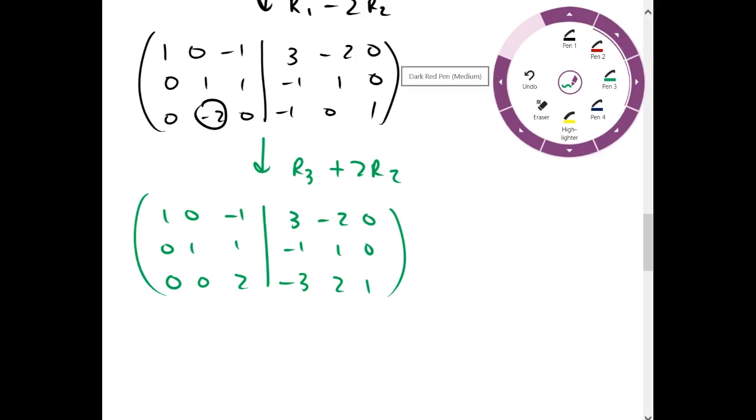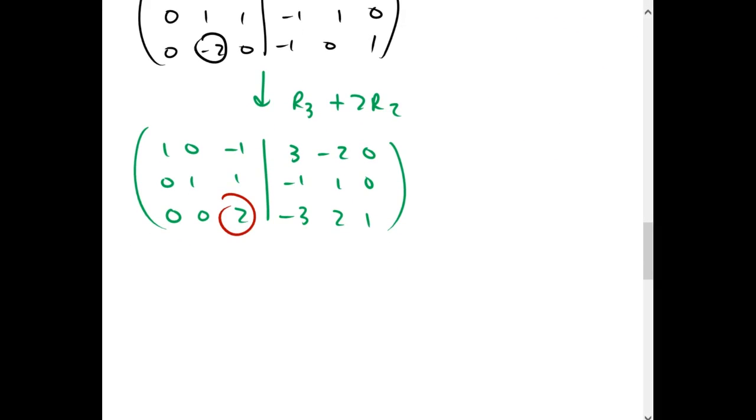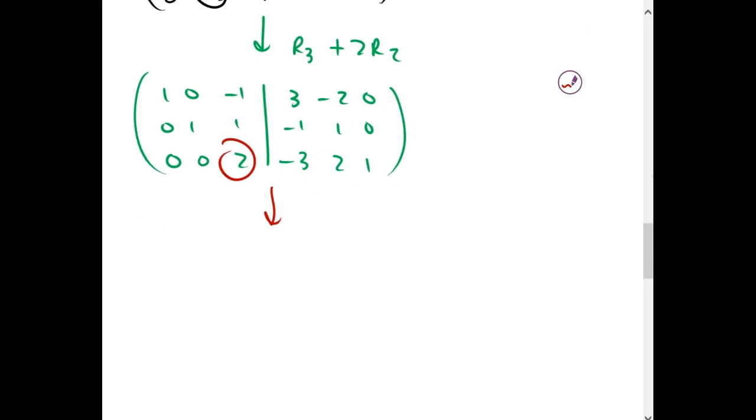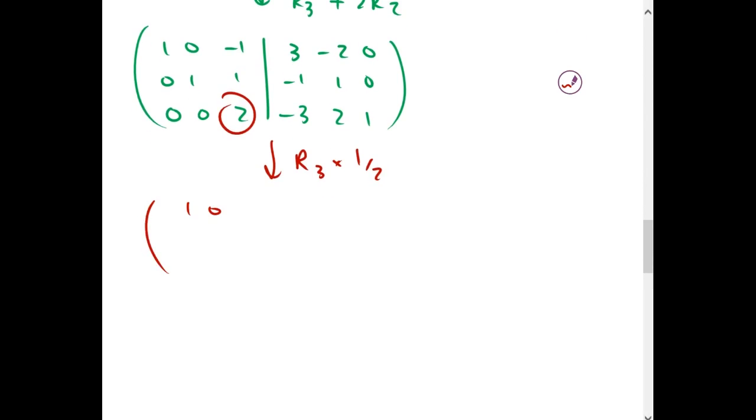And now we want to get a 1 here. So we're gonna scale that row by 1 half. Which will give us 0, 0, 1 on the bottom, negative 3 halves, 1, and 1 half.